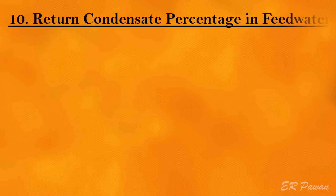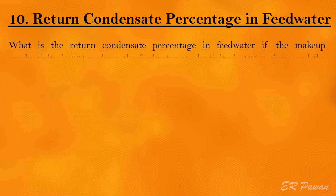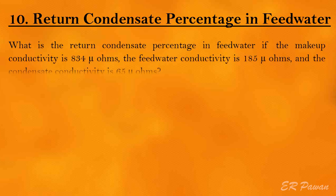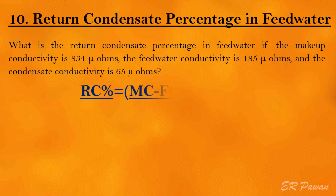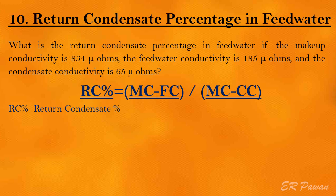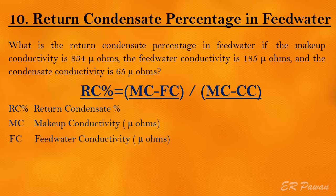Formula 10 — Return Condensate Percentage in Feed Water. What is the return condensate percentage in feed water if the feed water conductivity is 185 mu-ohms and the condensate conductivity is 65 mu-ohms? Return condensate percentage equals makeup conductivity minus feed water conductivity divided by makeup conductivity minus condensate conductivity. Let's put the value in the formula.